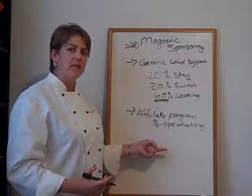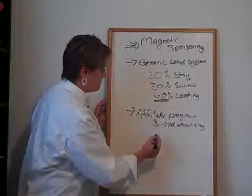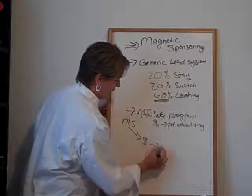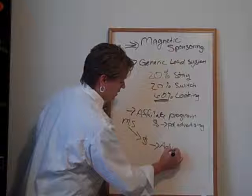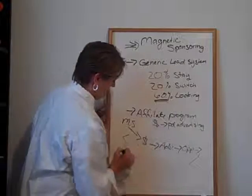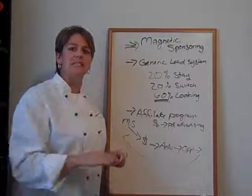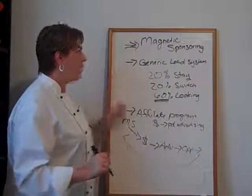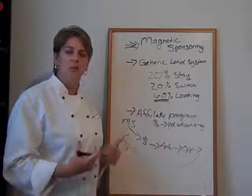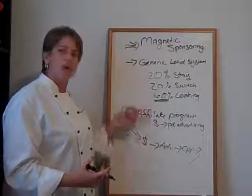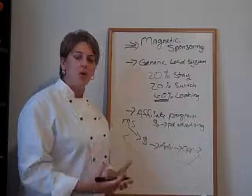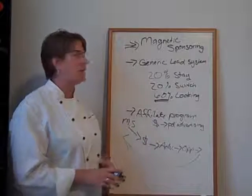Through the power of magnetic sponsoring, they can start generating their own leads without beating their family and friends over the head with their opportunity — and in doing that, get paid to continue to prospect. This creates an amazing circle: the money you get from magnetic sponsoring pays for your advertising, which you can use towards your opportunity or back into magnetic sponsoring. So now you're creating a secondary form of residual income all based on training and education, so that when people join you, they already understand the attraction marketing piece.